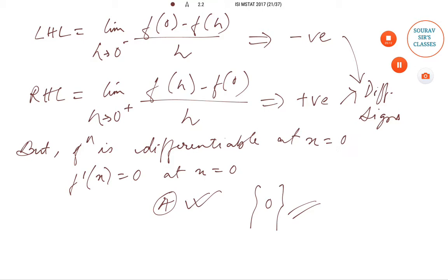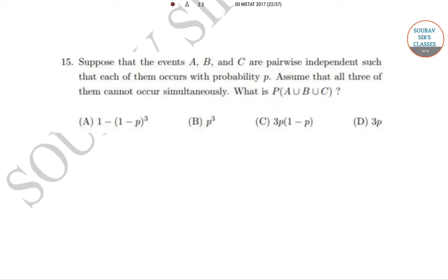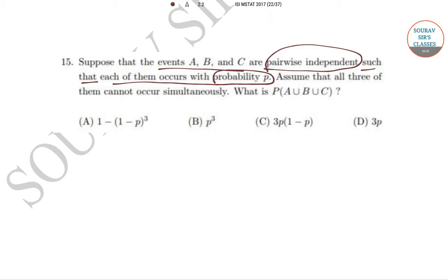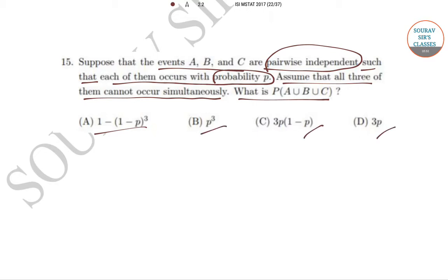Let's move on to question number 15. In question 15, there are three events A, B, C which are pairwise independent, each occurring with probability p. The probability of A ∩ B ∩ C is p, and it is assumed that all three cannot occur simultaneously. We need to find P(A ∪ B ∪ C), with options: (1 − (1−p))³, pq, 3p(1−p), and 3p.